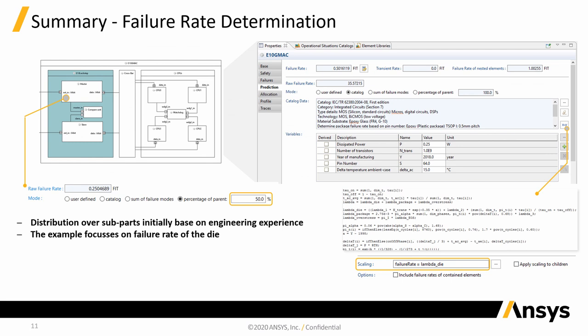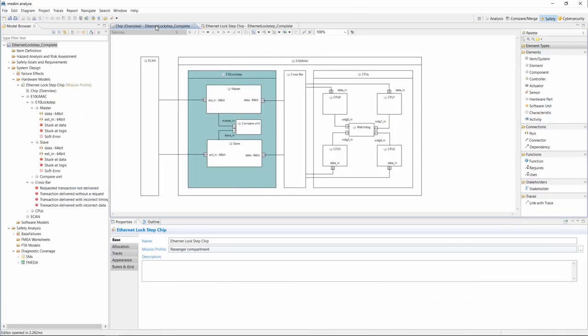Engineering knowledge can now be used to break down the total failure rate to the individual components by percentages. For example, the master gets 50% of its container 10E lockstep. We focus here purely on the distribution of the die failure rate and scale this value to the failure rate of the die. A lot of this information is at the moment a rough estimation — for instance, the distribution of the failure rate — but they already enable an initial calculation of the hardware metrics.